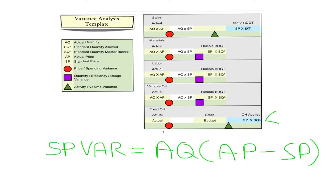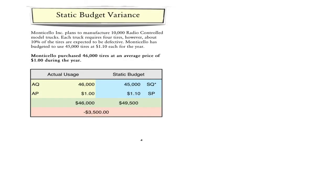This slide presents the basic template for two-way variance analysis and shows the variances for sales, materials, labor, variable overhead, and fixed overhead. The sales price variance, for example, is the difference between the actual quantity of units sold at the actual price minus the actual quantity of units sold at the budgeted price. One somewhat controversial notion is the correct number to use when determining the fixed overhead volume variance — here we use the standard quantity allowed, though analysts often use a number based on how overhead is applied within a given system.